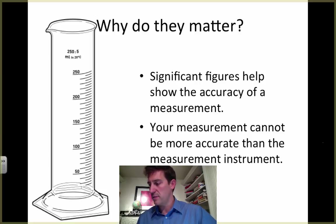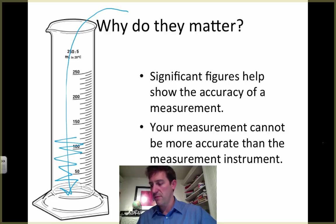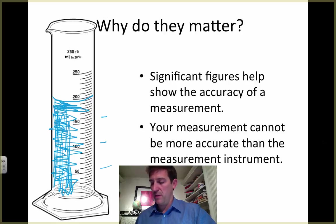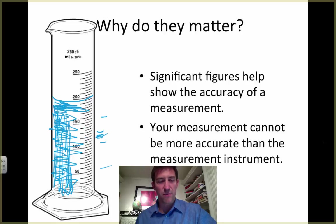I'm going to take some blue liquid and pour it into my graduated cylinder like so, and it's going to start to fill up. When I look at my graduated cylinder and my measuring device, you can see I've got some numbers here. We're going up by increments of 50 milliliters, and then I've got larger ones in between — one, two, three, four, five of those — so that must be 10 milliliters, and then the little ones in between are another 5 milliliters.